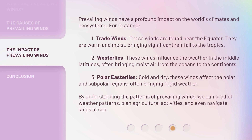Prevailing winds have a profound impact on the world's climates and ecosystems. Trade winds, found near the equator, are warm and moist, bringing significant rainfall to the tropics. Westerlies influence the weather in the middle latitudes, often bringing moist air from the oceans to the continents. Polar easterlies are cold and dry, affecting the polar and subpolar regions, often bringing frigid weather.